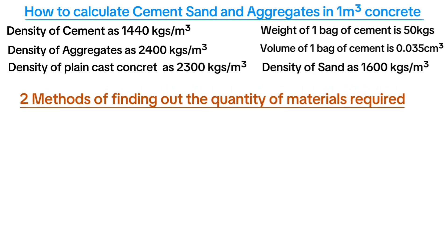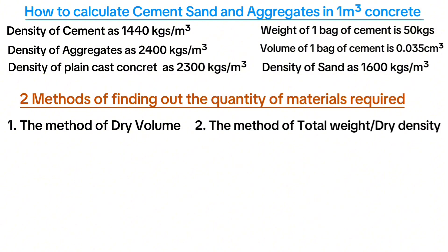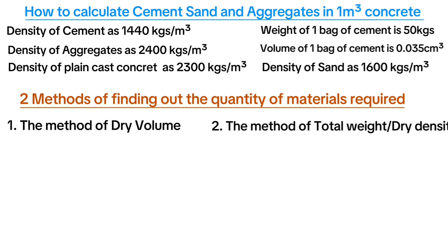There are two methods of finding out the quantity of materials required: the method of dry volume, and the method of total weight or dry density. Let's first use the method of dry volume.